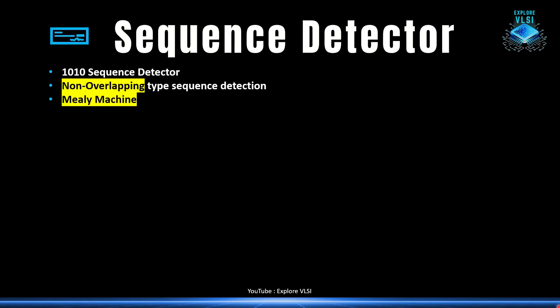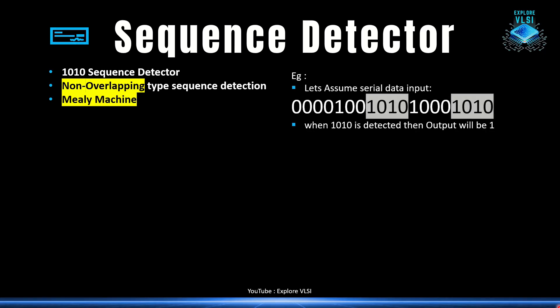The problem statement: we have a continuous stream of data and whenever we see 1010 we need to detect it and the output should be one. We will have 1010 twice, so the output will be two ones. To detect these four bits of data we require four states in a Mealy machine. In a Moore machine we used five states, because the output depends only on the current state, so we need one extra state to assert the output.